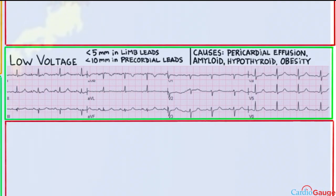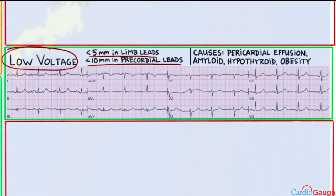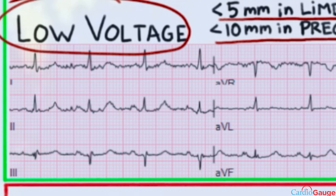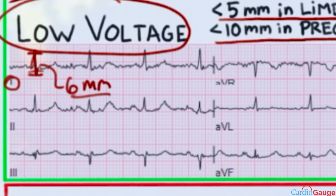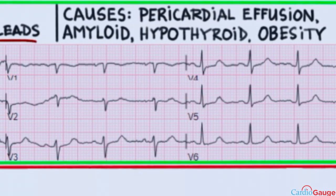Here's our last item for level one — low voltage. Low voltage is defined as less than 5 millimeters in limb leads, or less than 10 millimeters in the precordial leads — it only needs to meet one of the two criteria. In the ECG, lead one is about 6 millimeters, so it doesn't meet criteria by the limb leads. But over in the precordial leads, the largest complex is probably in V4, and that's slightly less than 10 millimeters, so it does meet criteria.